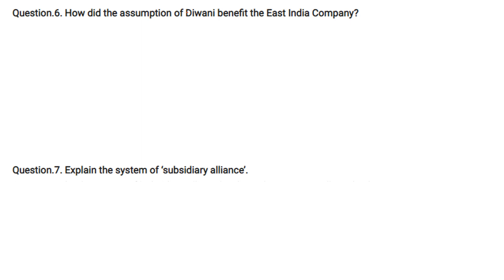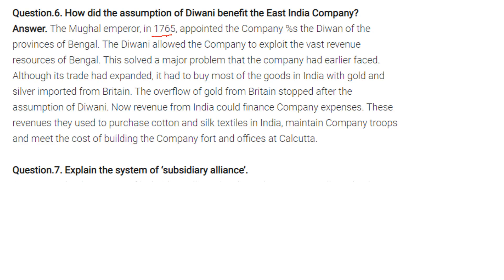How did the assumption of Diwani benefit the East India Company? The Mughal Emperor in 1765 appointed the company as the Diwan of the provinces of Bengal. The Diwani allowed the company to exploit the vast revenue resources of Bengal. This solved a major problem: earlier the company had to buy goods in India with gold and silver imported from Britain. After the assumption of Diwani, the overflow of gold from Britain stopped. Revenue from India was used to purchase cotton and silk textiles, maintain company troops, and cover the cost of building company forts and offices at Calcutta.